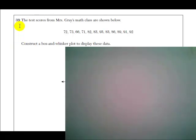Okay, here's the last question on the August 2009 Integrated Algebra Regents, number 39. The test scores from Mrs. Gray's math class are shown below, and we get these 12 numbers here. Construct a box and whisker plot to display these data.